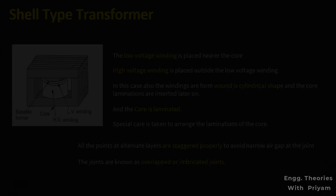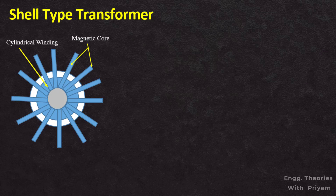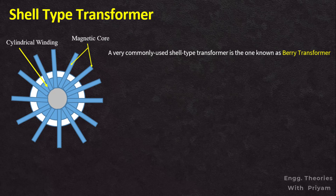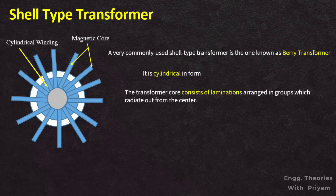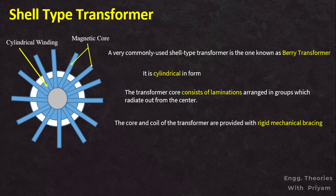A very commonly used shell type transformer is known as the Berry transformer, named after its designer, and is cylindrical in form. The transformer core consists of laminations arranged in groups which radiate out from the center. In order to avoid possible insulation damage due to movement of strips or windings, the core and coils are provided with rigid mechanical bracing.